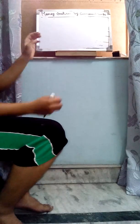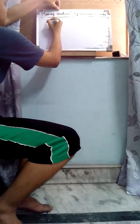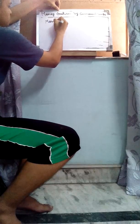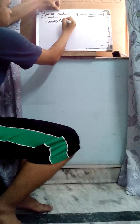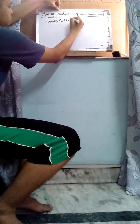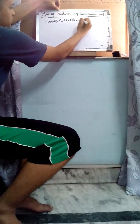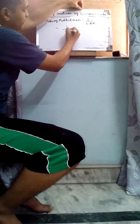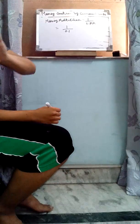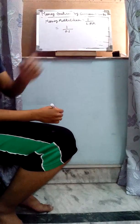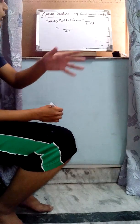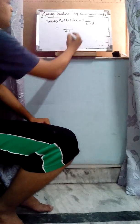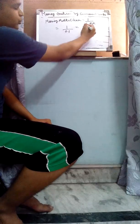Now I will tell you about how to calculate the money multiplier. Money multiplier is equal to 1 divided by the legal reserve ratio, which is 1 divided by 0.1, because the legal reserve ratio was 10%, so 10 divided by 100 equals 0.1. Therefore the money multiplier is equal to 10.